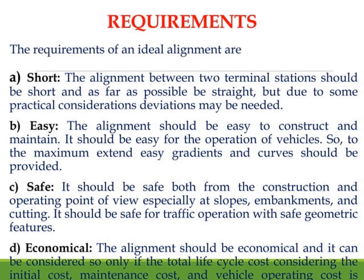There may be a valley, a bridge, or a hill inside a particular alignment — we can avoid that and take a diversion. The alignment should be safe — especially considering slopes, embankment, and cutting — safe both from construction and operating perspectives: safe vehicle operation and safe geometric features. Economical means we consider the total life cycle cost — initial cost, maintaining cost, and vehicle operating costs.